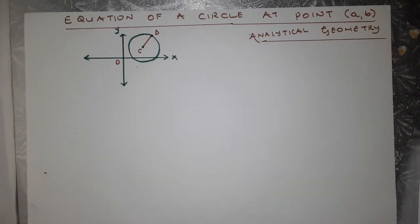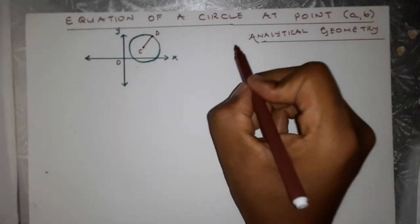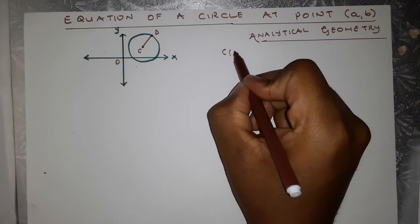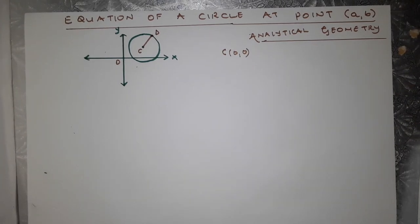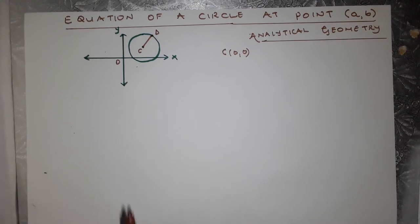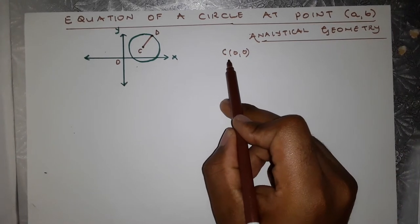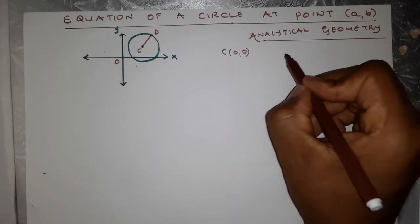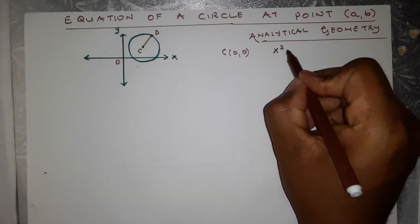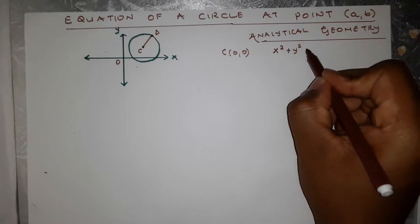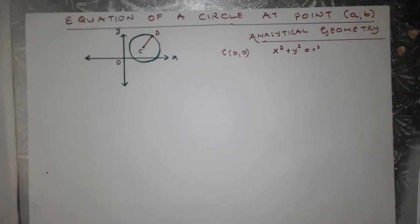Initially, in the previous video, we tackled an equation of a circle that had a center of (0, 0). At this point in time, we are going to shift the circle and see the effect of those shifts on the center of the circle and the equation of a circle as a whole. We knew that the equation of a circle centered at the origin is x squared plus y squared equals r squared.